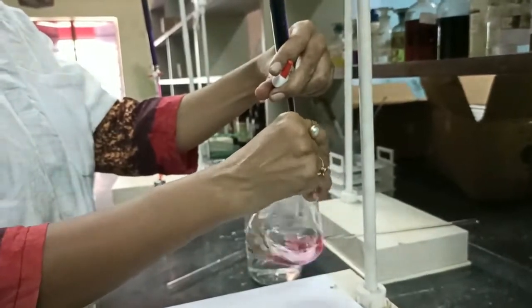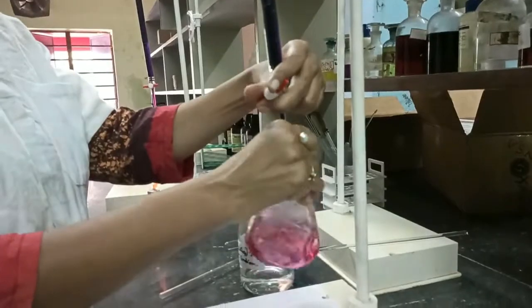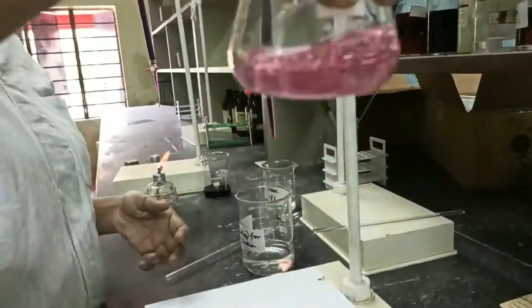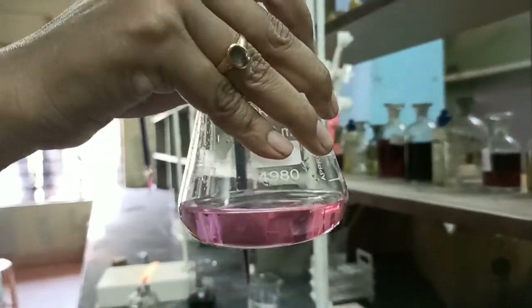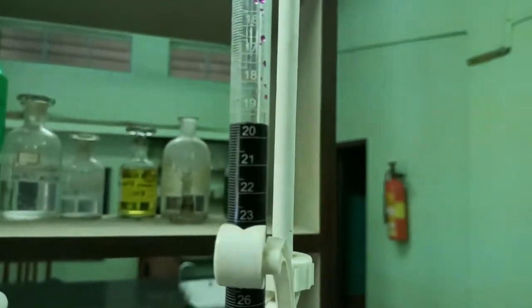You need to titrate with constant shaking. As you can see the color is coming and disappearing. When the color will persist that will be your end point. So that's the end point. This is the end point and the color is persisted. This is the end point 19.5.